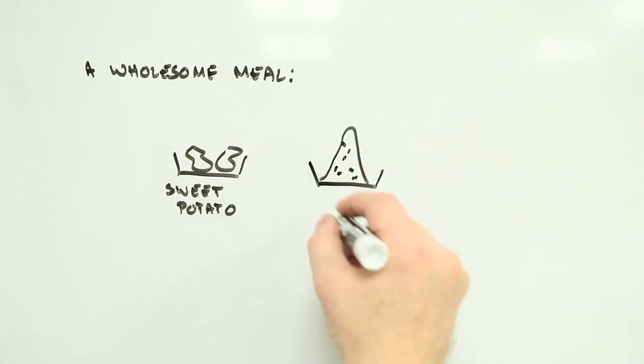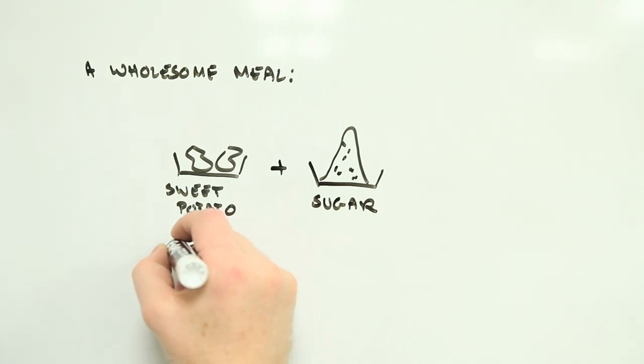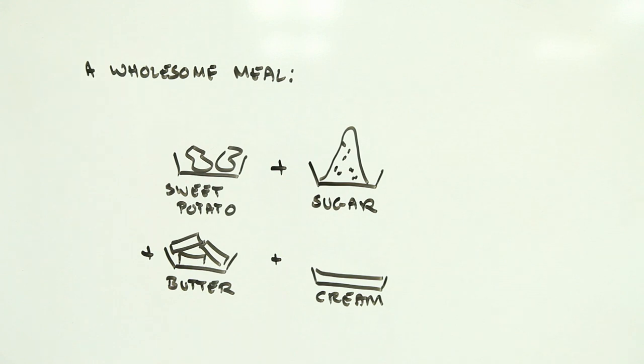By the late 1800s, recipes were being preserved that called for adding a pound of sugar to every pound of sweet potato. And why stop there? Recipes from the time show cooks throwing in sugar, butter, cream, and anything else that tastes good, but probably isn't, into their sweet, sweet potatoes.